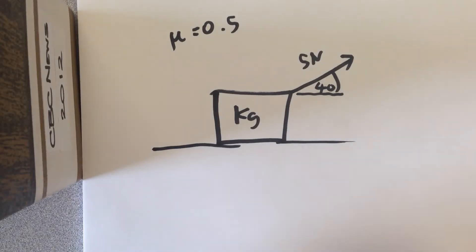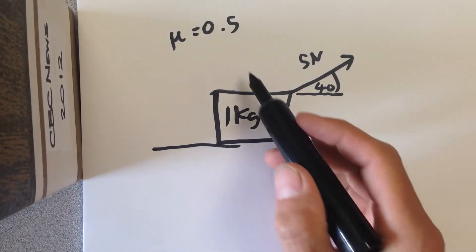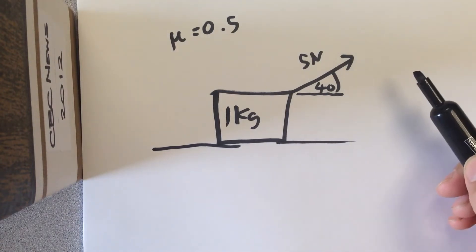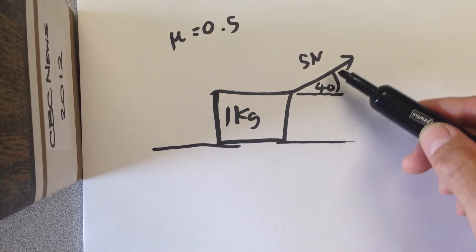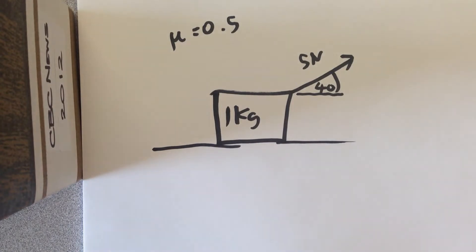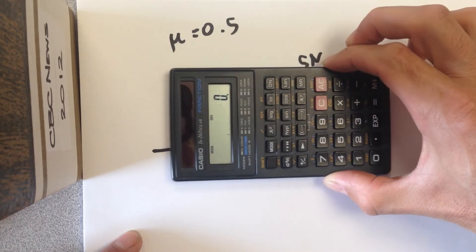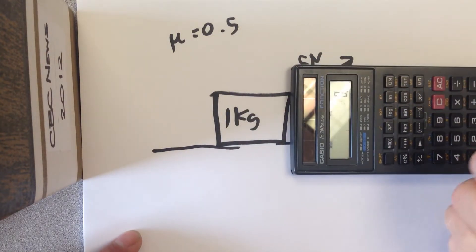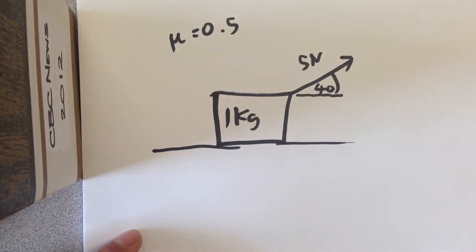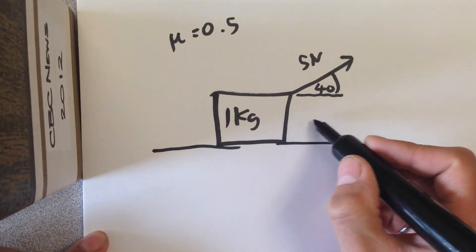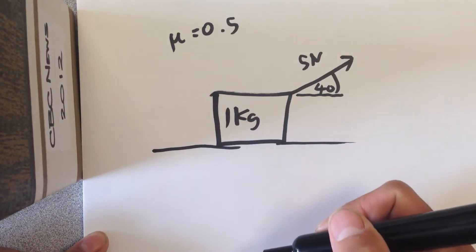We're looking at a one kilogram block resting on a surface with a coefficient of friction of 0.5, and it's being pulled by a 5 Newton force at an angle of 40 degrees elevation from the horizon. The block is being pulled upward and sideways simultaneously. We're going to analyze this by taking that force and rewriting it as two components: one parallel to the surface and one perpendicular to the surface.